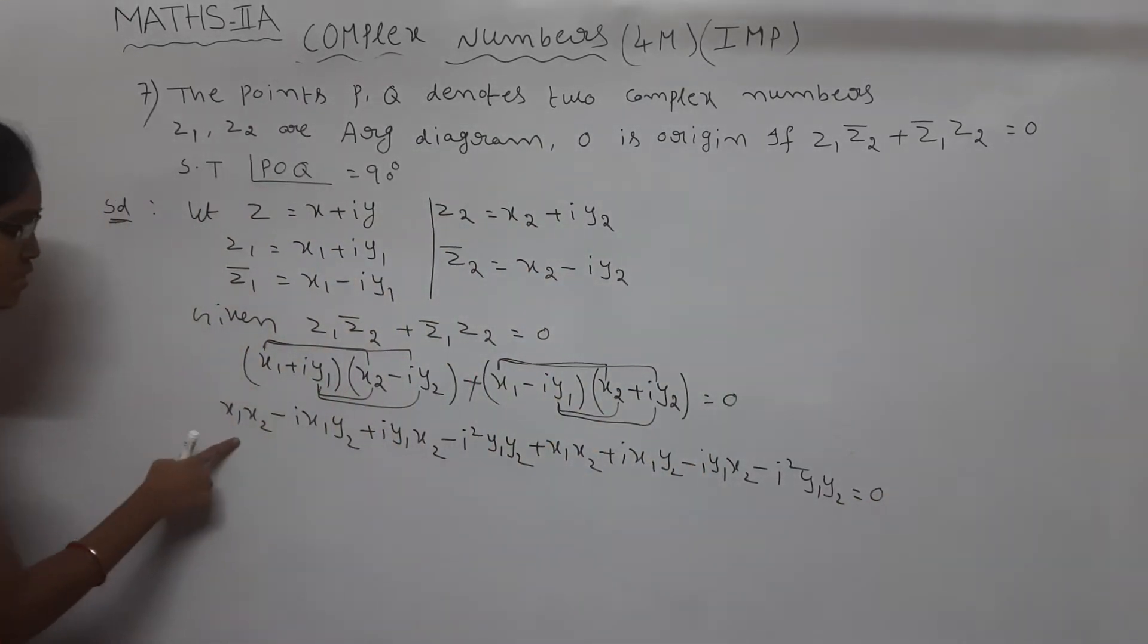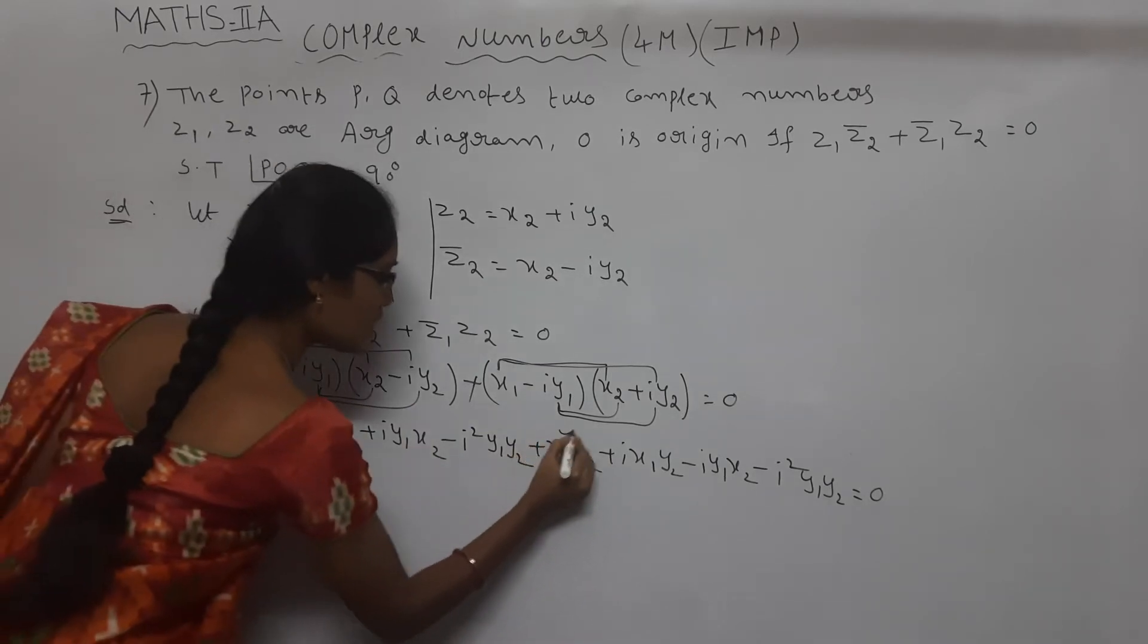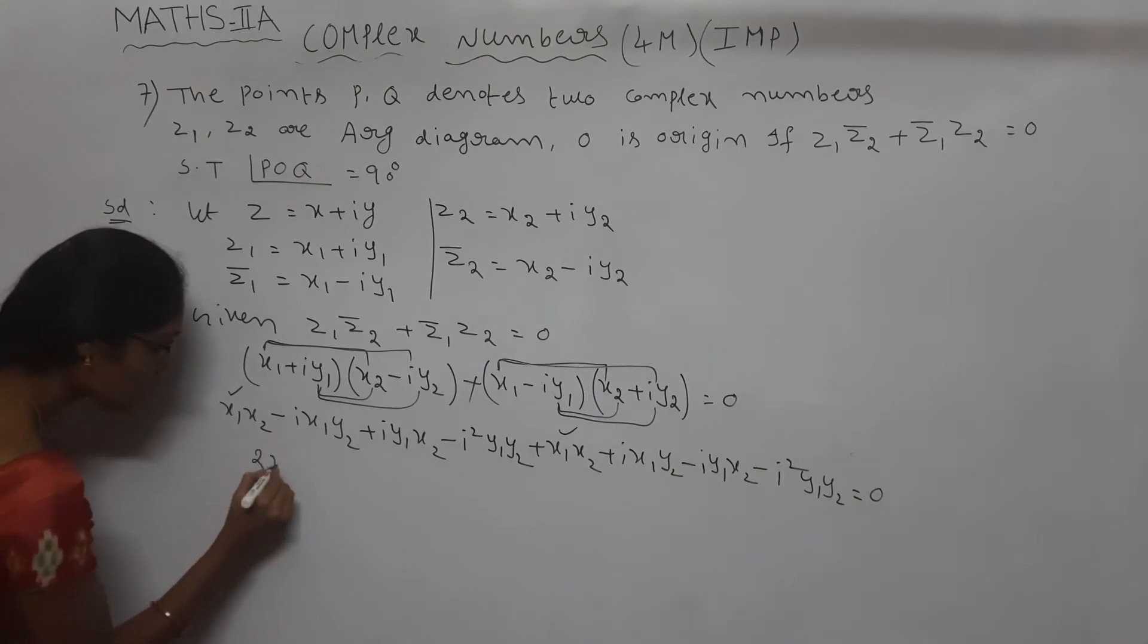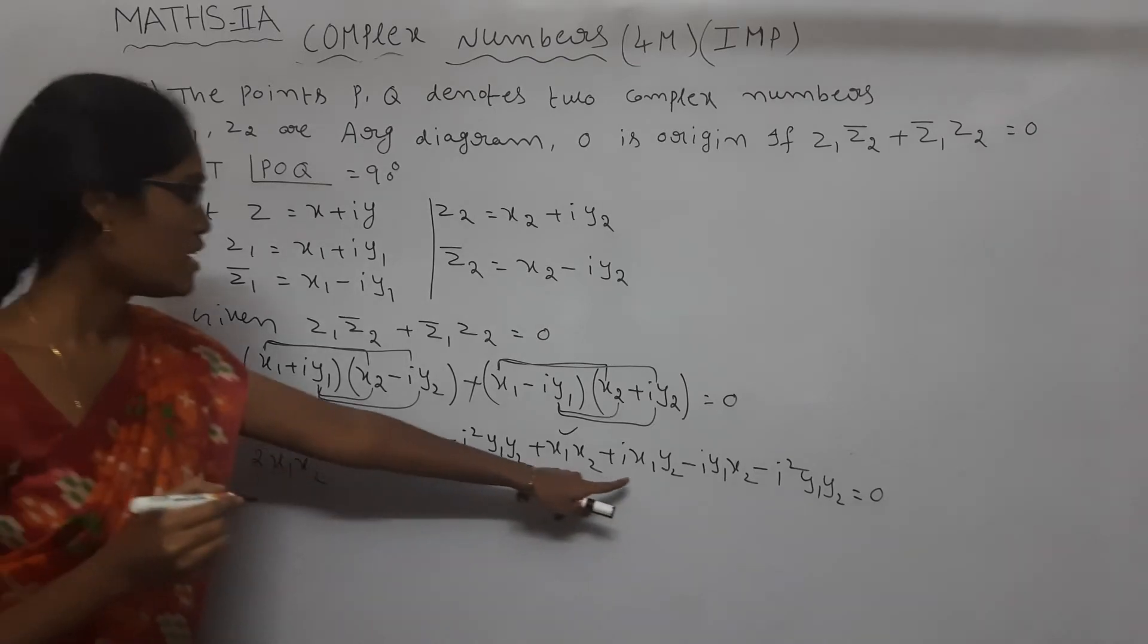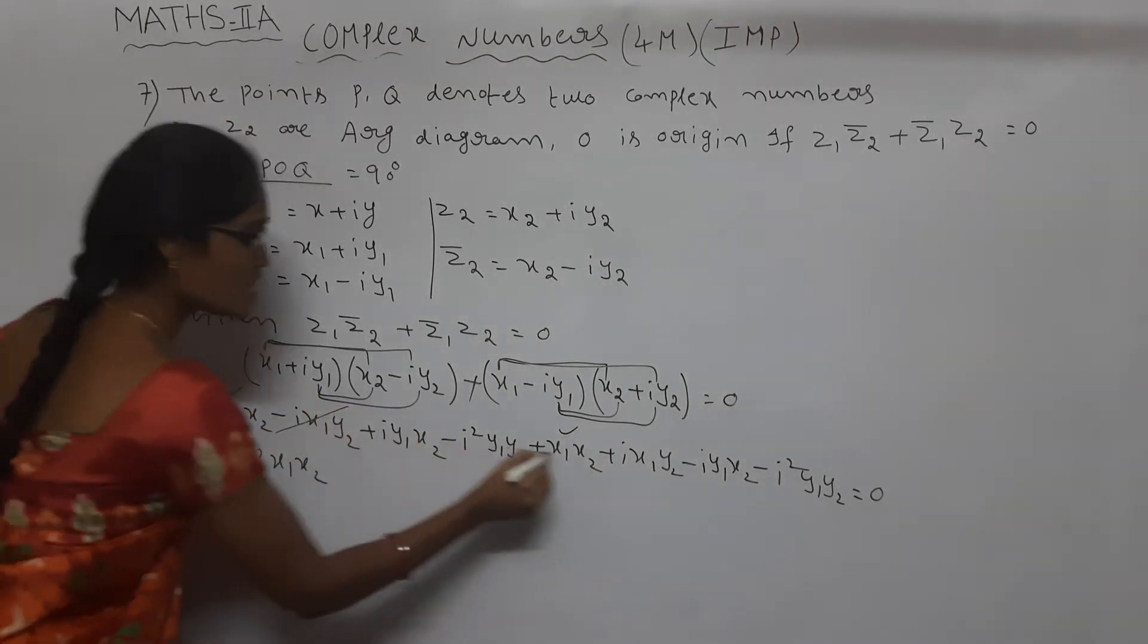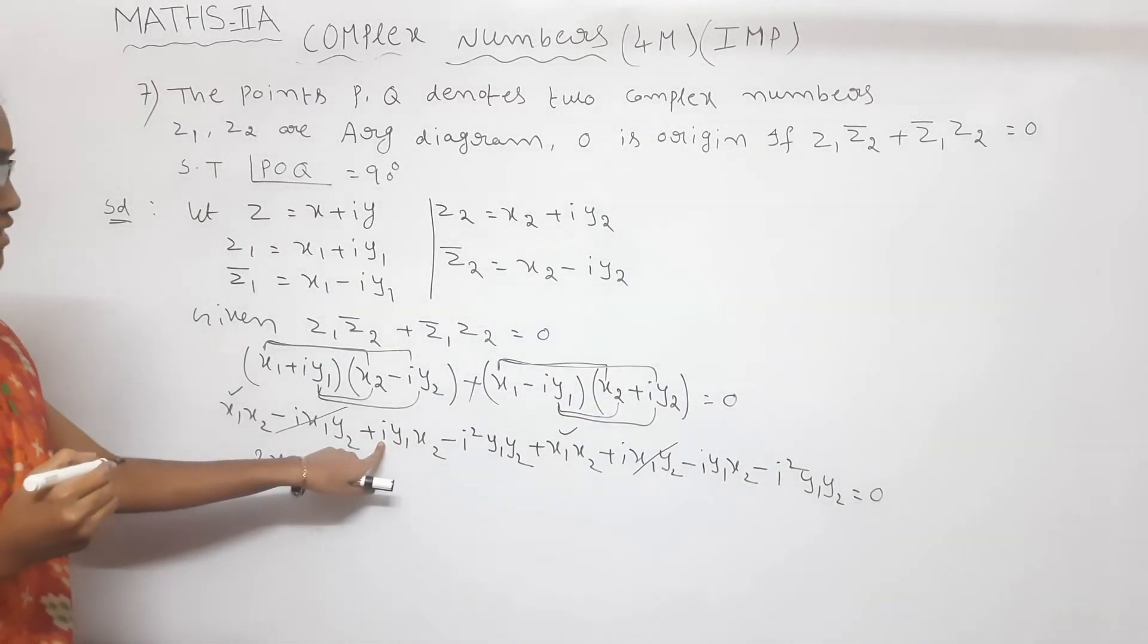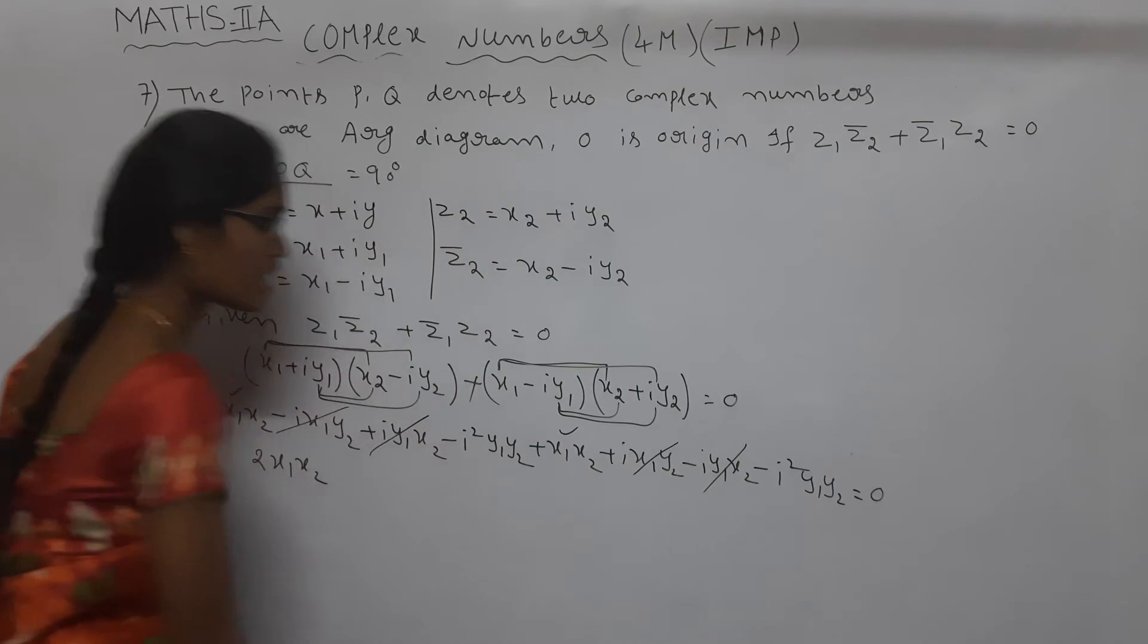See here, X1X2 and here also X1X2. X1X2 plus X1X2, add these both terms to 2X1X2. Next, minus iX1Y2 plus iX1Y2, these cancel. Next, iY1X2 minus iY1X2, this also gets canceled.